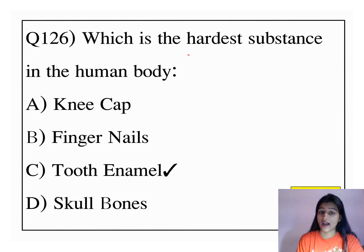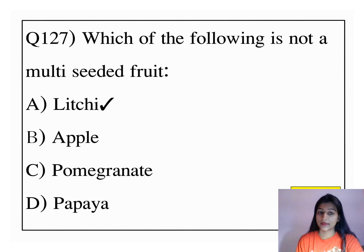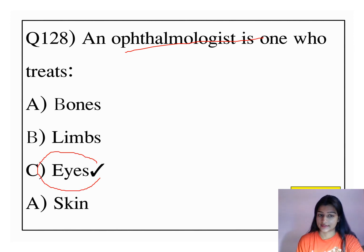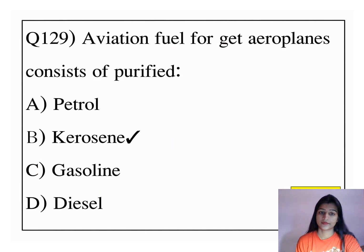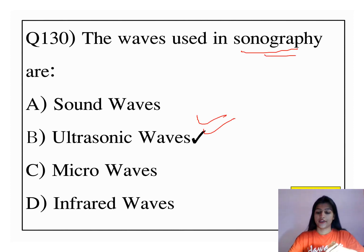Which is the hardest substance in the human body? The answer is tooth enamel. An ophthalmologist is one who treats eyes. Aviation fuel for jet aeroplanes consists of purified kerosene. The waves used in sonography are ultrasonic waves.